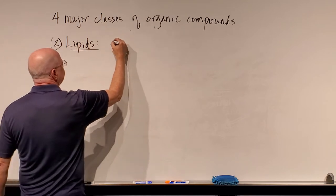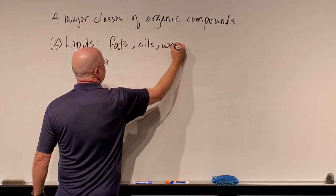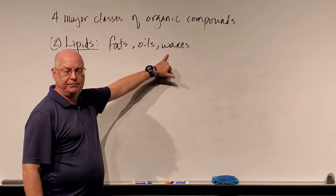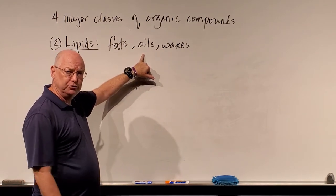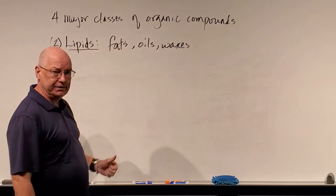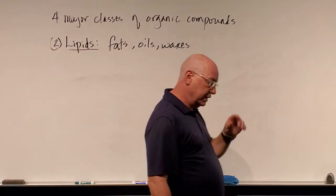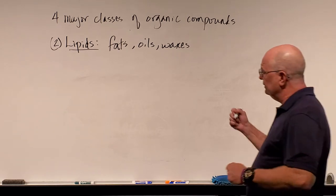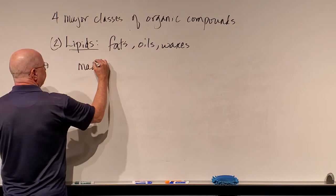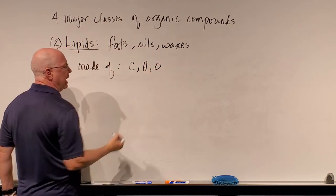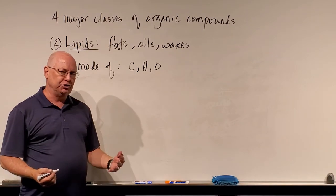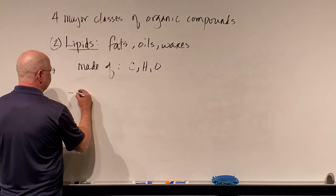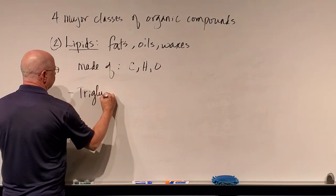In nature, lipids exist as fats, oils, and waxes. Beeswax, earwax — any natural waxes are made of lipids. If it's an oil — canola oil, vegetable oil — it's a lipid. If it's animal fat or bacon fat, it's a lipid. All lipids are made of carbon, hydrogen, and oxygen, but arranged differently than sugars. One major class is called triglycerides.